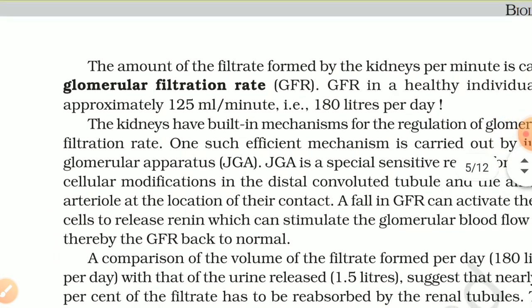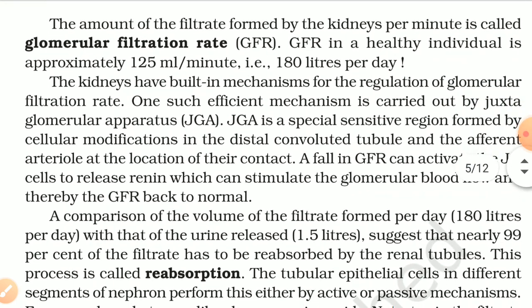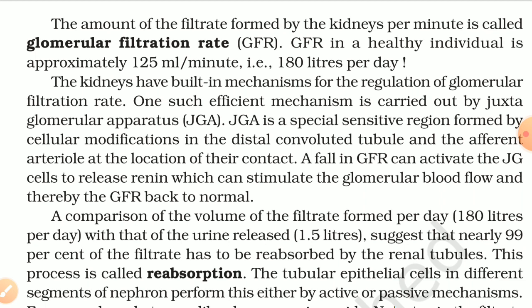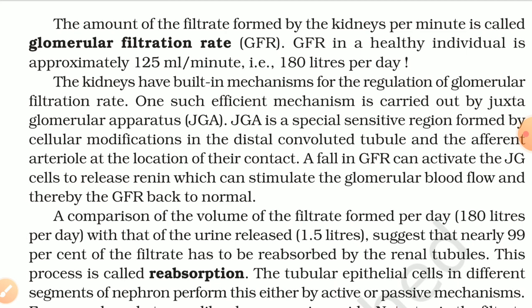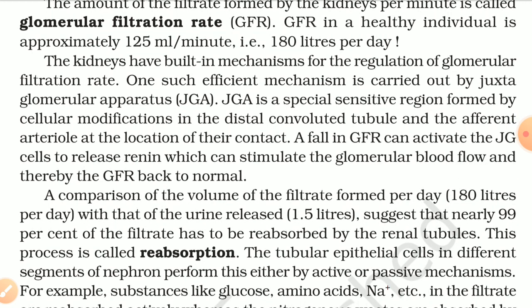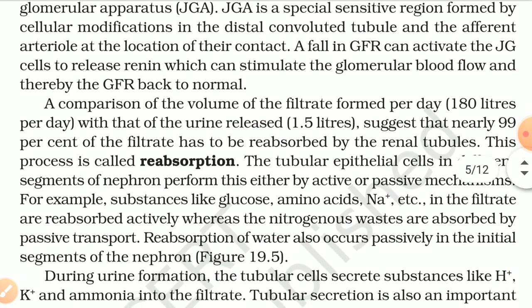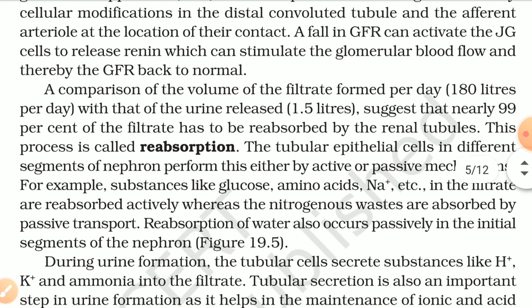The amount of filtrate formed by the kidneys per minute is called the glomerular filtration rate (GFR). GFR in a healthy individual is approximately 120 ml per minute, i.e., 180 liters per day. The kidneys have a built-in mechanism for regulation of GFR. One such efficient mechanism is carried out by the juxtaglomerular apparatus (JGA). JGA is a special sensitive region formed by cellular modifications in the distal convoluted tubule and the afferent arteriole at their contact point. A fall in GFR can activate the JG cells to release renin, which stimulates glomerular blood flow and thereby restores GFR to normal. Comparing the 180 liters of filtrate formed per day with the 1.5 liters of urine released suggests that nearly 99% of the filtrate is reabsorbed by the renal tubules — this process is called reabsorption.